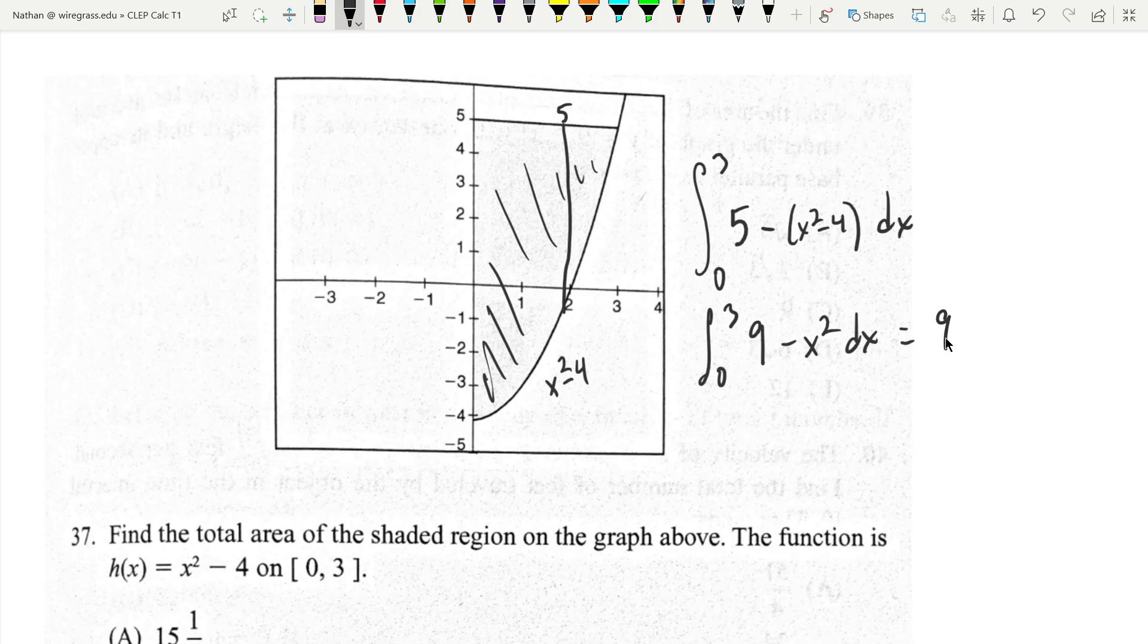That's just going to be 9x minus 1 third x cubed evaluated at 0 and 3. Zero just goes away.